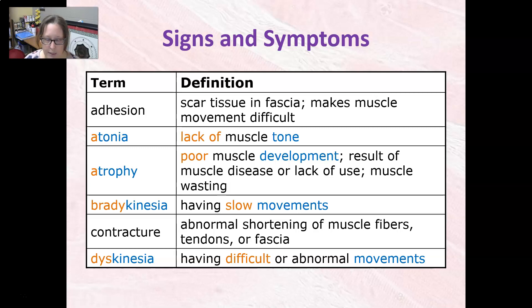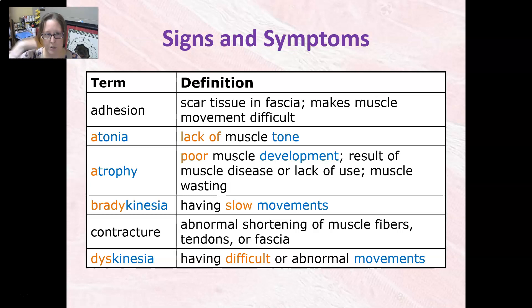Bradykinesia is having slow movements. Contracture is an abnormal shortening of the muscle fibers, tendons, or fascia. They tend to be in a contracted kind of position.